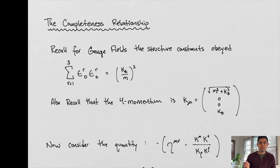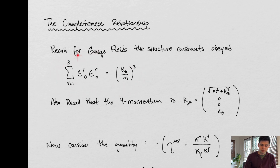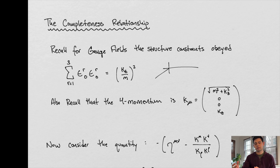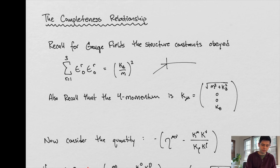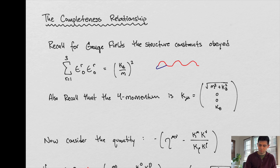So the completeness relationship — let's recall a few things from last time. We have some sort of field and we have our photon traveling in this field. Our photon travels in a wave and it has electromagnetic properties to it.